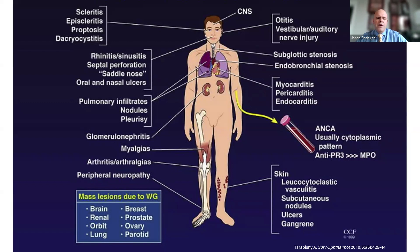GPA can also affect the lining of the lungs, typically presenting as pain with deep breaths. It can affect the kidneys — typically when there's kidney involvement, you won't have symptoms until it's pretty far along, and it will first present as microscopic blood in the urine. It can affect the muscles, generally presenting as pain or weakness. It can cause joint pains. It can affect the peripheral nerves, typically presenting as persistent weakness or numbness in the hands, arms, or legs. It can affect the skin, with the most typical rash appearing on the lower legs as pinpoint red dots that can get bigger, look like bruises, and become raised.